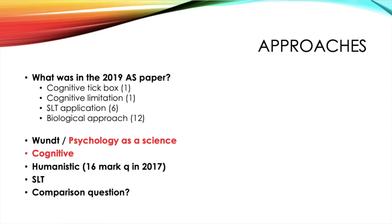Next, you've got social learning theory. That's your process of attention, retention, motor reproduction, and then motivation. Within this you also need to know what vicarious reinforcement is, what identification is, and also Bandura's social learning theory study using the Bobo doll.